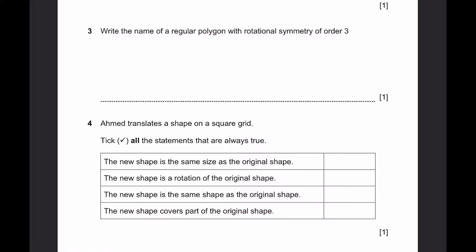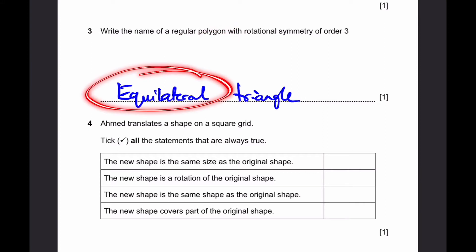Question 3. Write a name of a regular polygon with rotational symmetry of order 3. We have a regular polygon with rotational symmetry of order 3. That means the number of sides it has is the same as the order of rotational symmetry, which is 3 sides. So the answer is equilateral triangle. If you write triangle alone, it's not enough because you need to write the regular polygon and equilateral is the only way a triangle can be regular.